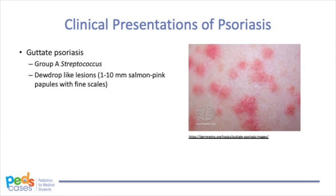Guttate psoriasis is another common presentation of pediatric psoriasis. It is classically associated with group A streptococcal infections, such as group A strep pharyngitis. Guttate psoriasis presents with teardrop-like lesions — hence the name guttate, which means drop-like — and presents as 1–10 mm salmon-pink papules with fine scales on top. However, this can appear violaceous or hyperpigmented in patients with darker skin.